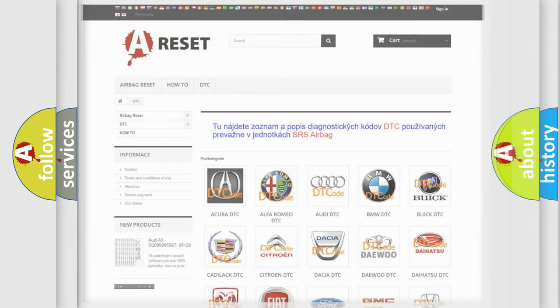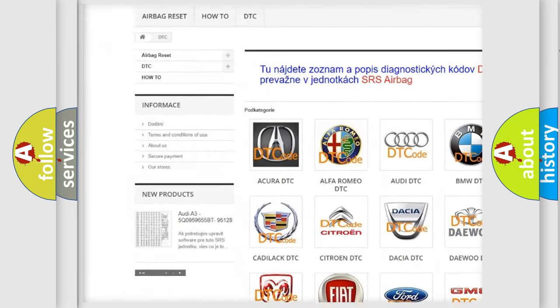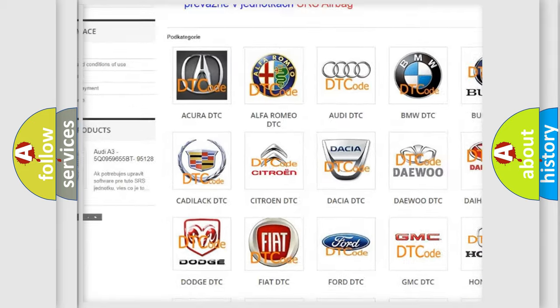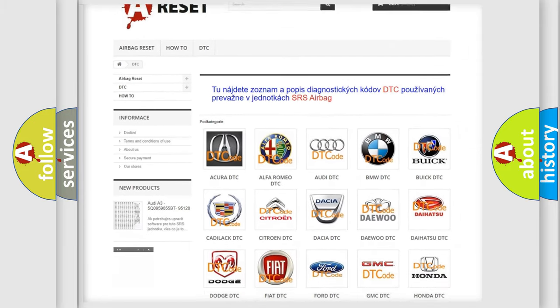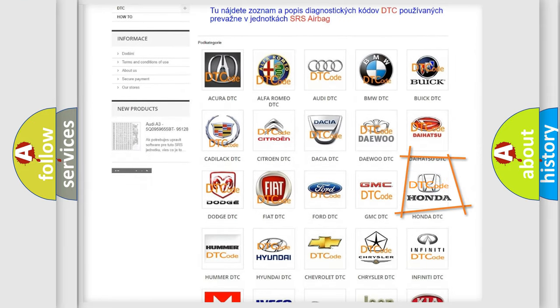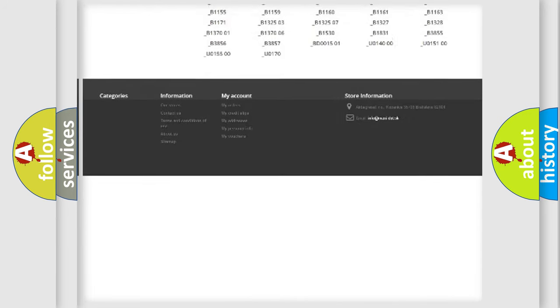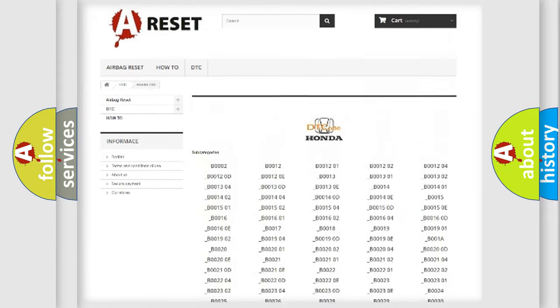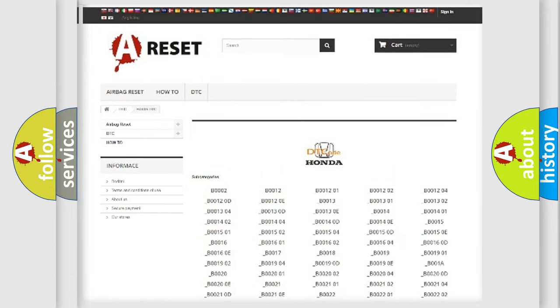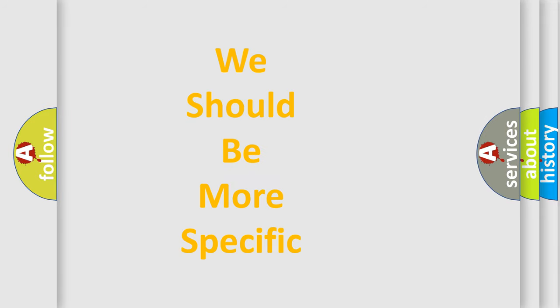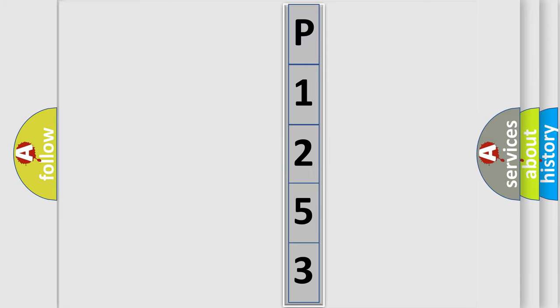Our website airbagreset.sk produces useful videos for you. You do not have to go through the OBD2 protocol anymore to know how to troubleshoot any car breakdown. You will find all the diagnostic codes that can be diagnosed in Honda vehicles, and many other useful things. The following demonstration will help you look into the world of software for car control units.